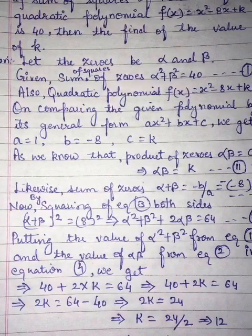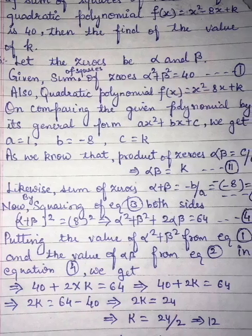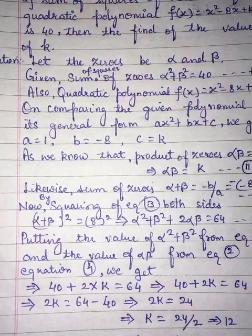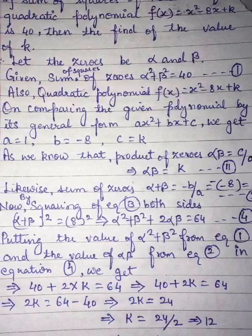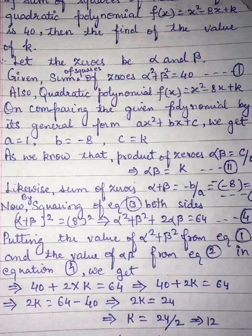On comparing the given polynomial by its general form ax squared plus bx plus c, we get a is equal to 1 by comparison, b is equal to minus 8, c is equal to K.